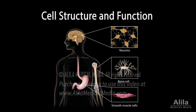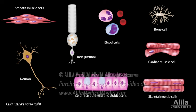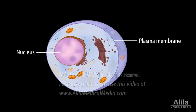All living organisms are composed of cells. Cells are responsible for all anatomical and physiological features of all body systems. Different cell types can vary greatly in shape and size, but they all have a common structure and similar components. A typical cell is enclosed in a plasma membrane and contains a nucleus and a cytoplasm.